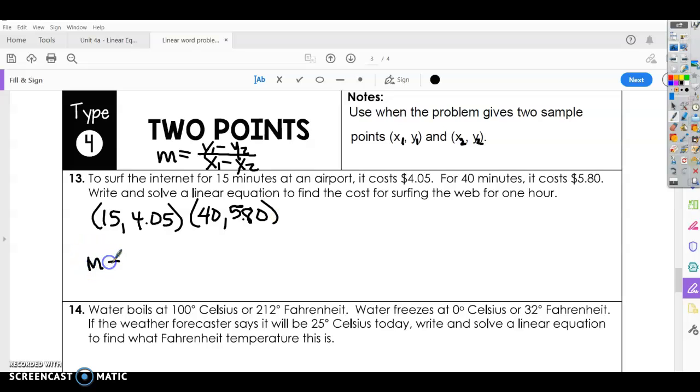So we're going to do, so we know this is our x and y from our first point, and we know this is our x and y from our second point. So y2, $5.80 minus $4.05 over 40 minus 15. Alright, so that's going to give me $1.75 over 25 minutes, which can be reduced to $0.07.